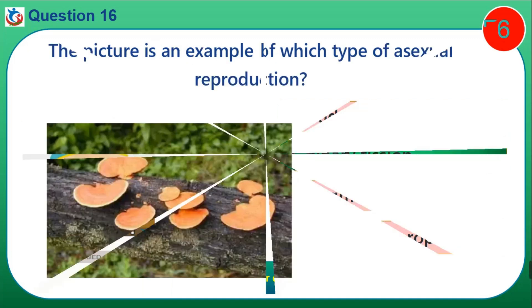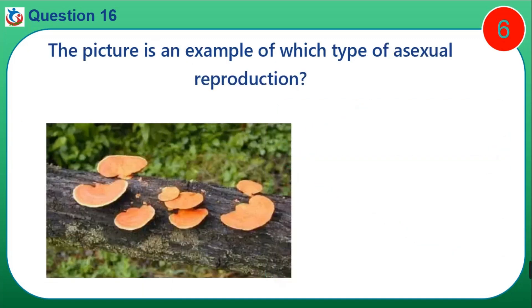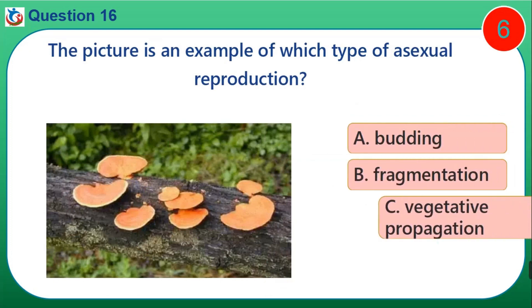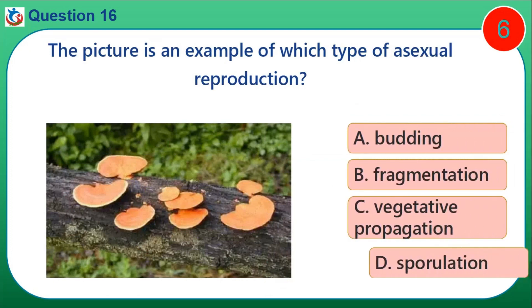Thank you! Question 16. A picture is an example of which type of asexual reproduction? A. Budding. B. Fragmentation. C. Vegetative propagation. D. Sporulation.